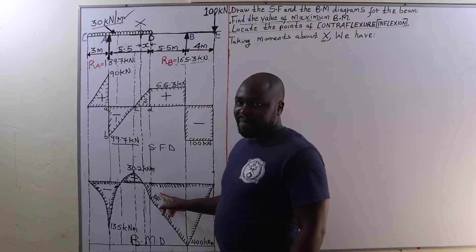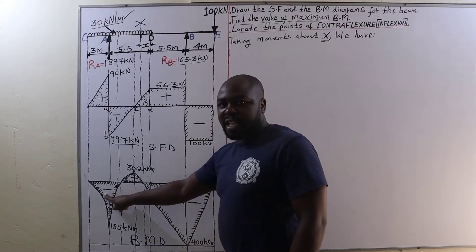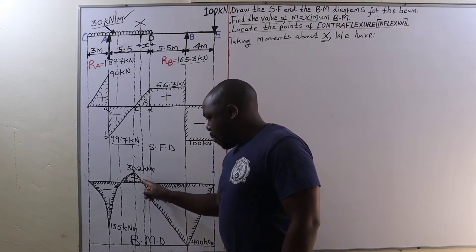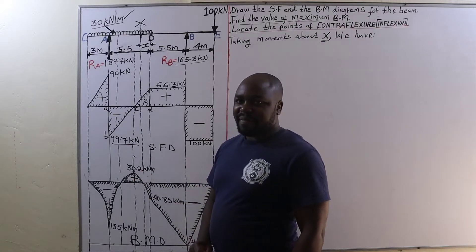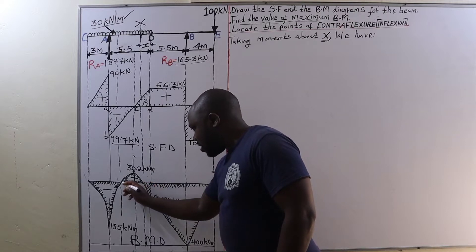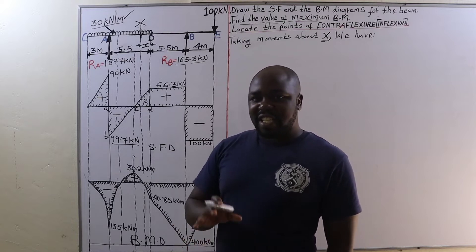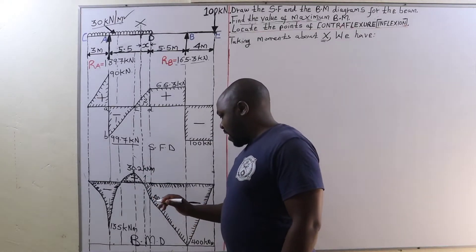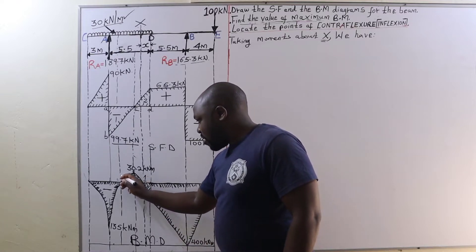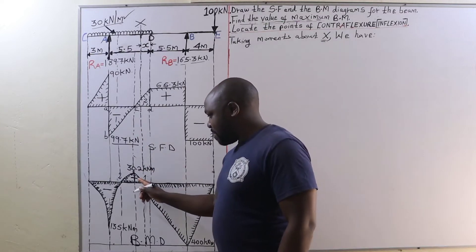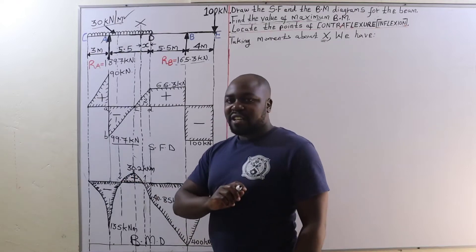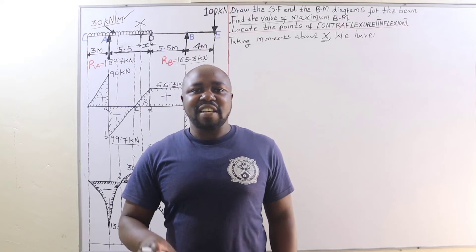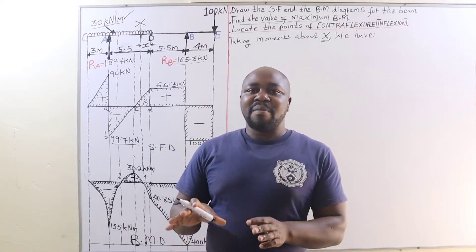When we look at our bending moment diagram, you will find that part of it is negative whereas this portion is positive. At these two points the bending moment is changing sign — for example, at point one the bending moment changes from negative to positive, and at the second point it changes from positive to negative. These are the points we call points of contra flexure.